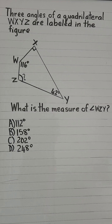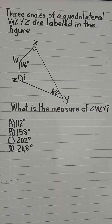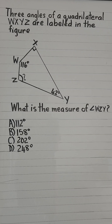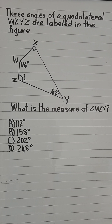First, we need to know that the interior angles of a quadrilateral all add up to 360 degrees. So we're going to add up the known angles and then subtract from 360 degrees to find our unknown angle.